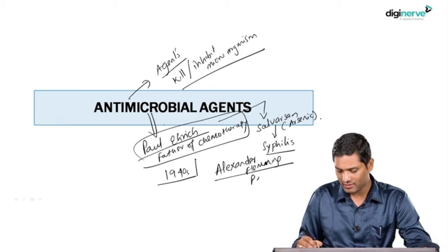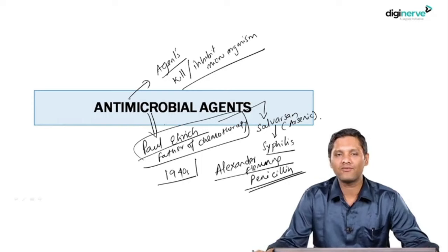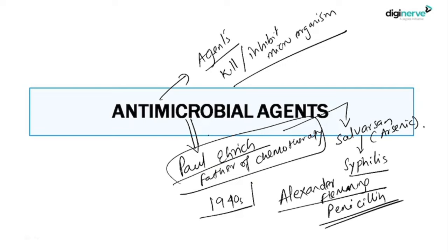Soon later in the 1940s, it was the great Alexander Fleming who discovered the first antibiotic of the world, that is penicillin. Following which, there were so many antimicrobial agents discovered, and that brought a great reduction of mortality in times of infections. Infectious diseases were treated after the discovery of penicillin, and that was a great invention to science.